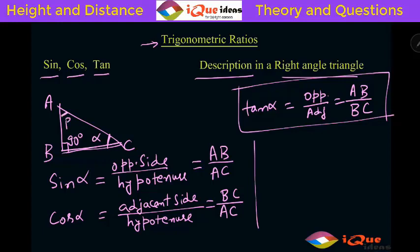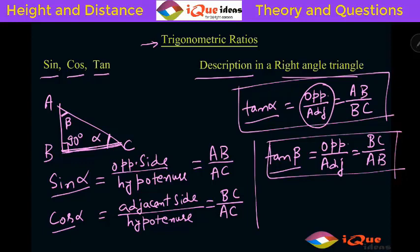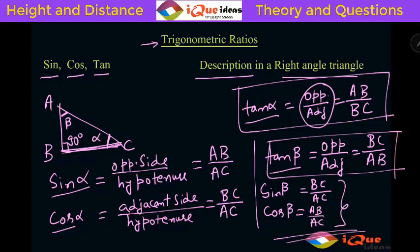Now if we also consider angle beta at vertex A: tan beta will be equal to — using the same definition, opposite upon adjacent — BC divided by AC. Similarly, cos of beta is adjacent divided by hypotenuse, which is AB divided by AC. So this is the basic revision of all the trigonometric ratios in terms of a right-angle triangle.